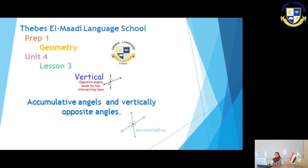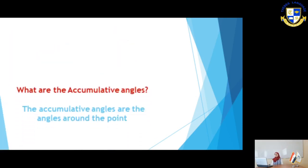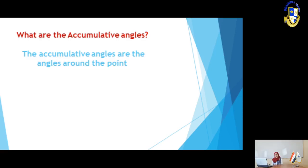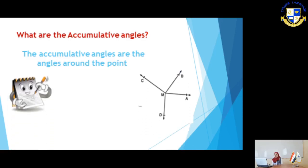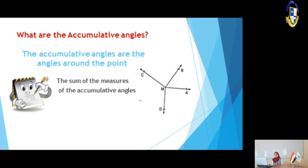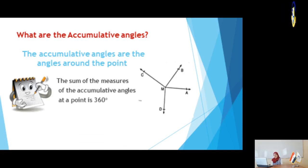Let's move to slide number 2. What are the accumulative angles? As we studied before in the primary stage with the pie chart, if we have some angles surrounding a point, and that point is the vertex of all angles, these angles are called accumulative angles, and the sum of their measures equals 360 degrees.